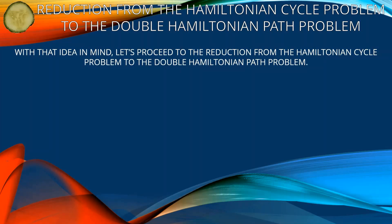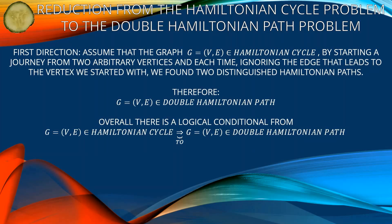With that idea in mind, let's proceed to the reduction from the Hamiltonian cycle problem to the double Hamiltonian path problem. First direction: assume that graph G = (V, E) is in Hamiltonian cycle.